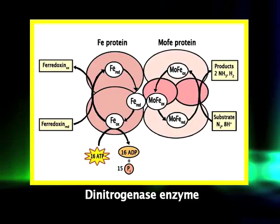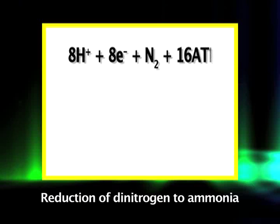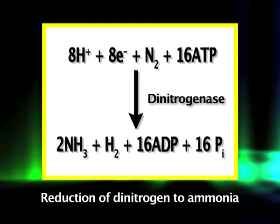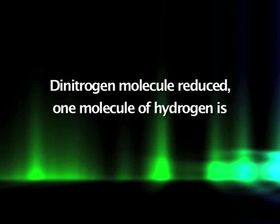The larger protein in the dinitrogenase complex is called the molybdenum-iron protein. It is a tetramer consisting of two pairs of identical subunits with a total molecular mass of 220 kilodalton. Each molybdenum-iron protein contains two molybdenum ions in the form of an iron-molybdenum-sulfur cofactor. The overall reaction of reduction of dinitrogen to ammonia by dinitrogenase utilizes ATP molecules. Note that the principal product of biological nitrogen fixation is ammonia, but that for every dinitrogen molecule reduced, one molecule of hydrogen is generated.